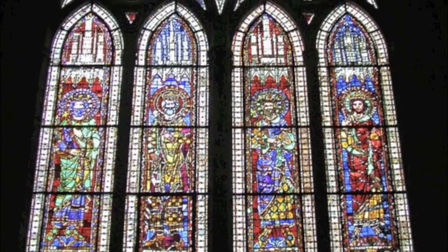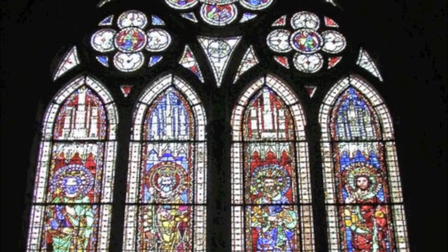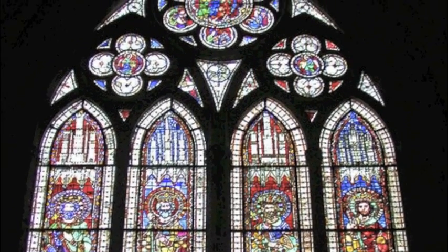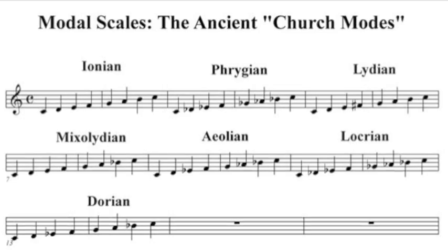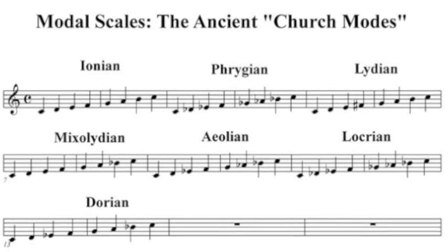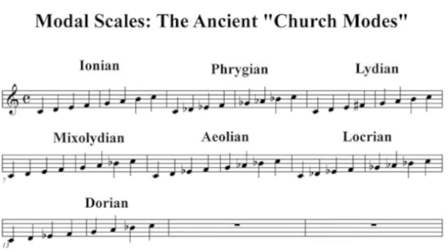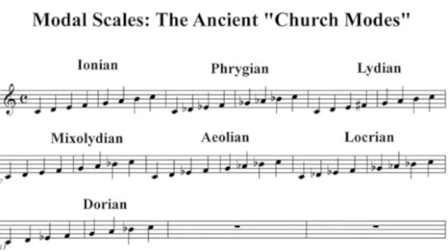So the church had tremendous influence on how music evolved, especially the notation of music. As you can see in this example, you see the earliest scales — the church modes: Ionian, Phrygian, Lydian, Mixolydian, and so forth.